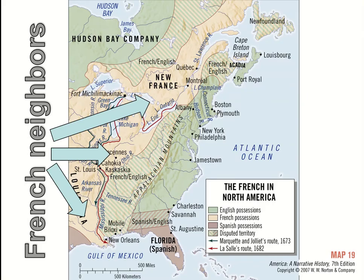Here we have our map of the colonies. The original 13 colonies are here in green, and we want to expand. Our neighbors are the French — we can't expand east because there's the ocean, so we can only expand west. Well, that is French territory. The area we're going to be fighting in is all of this area on the backside of the Appalachian Mountains — between the French and English claims — because as colonists we want to expand since more and more people are moving here.